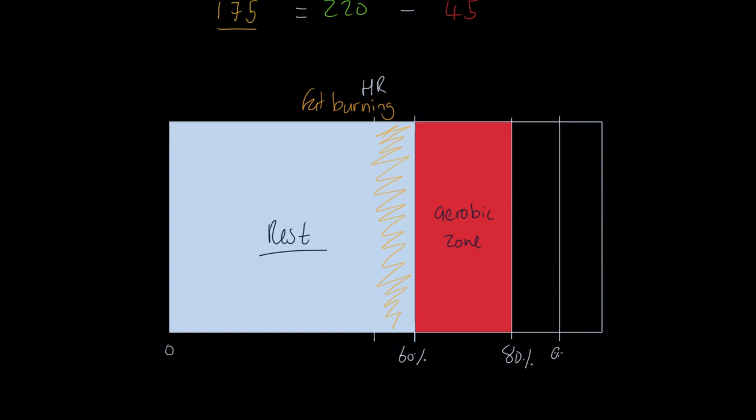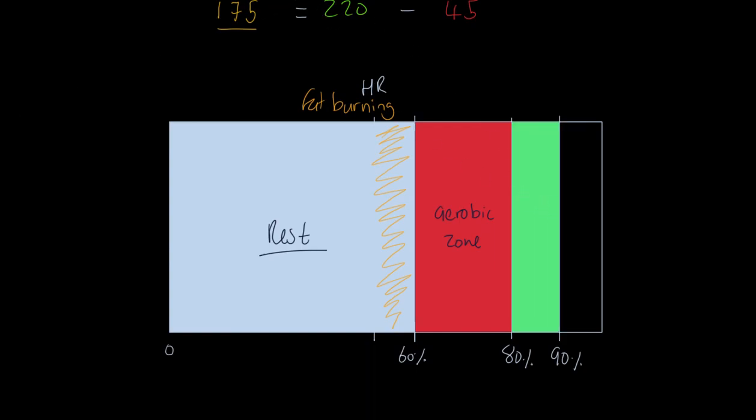From 80 to 90%, any work that we do in this area here, this is what we would describe as anaerobic development. Anaerobic work. So at this intensity of exercise we're not able to provide sufficient oxygen to power the movement aerobically, we have to do anaerobic work, so that becomes interesting.